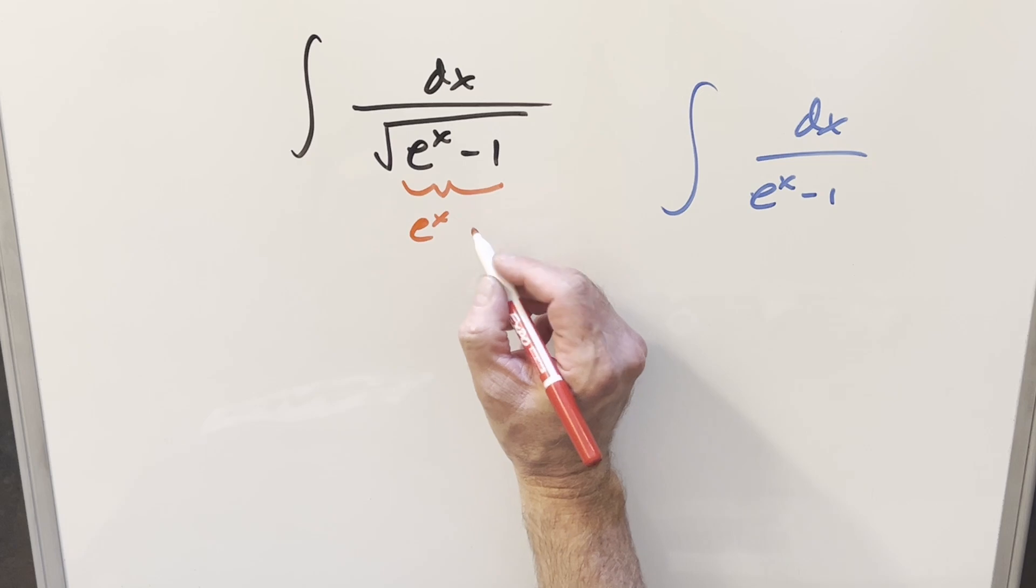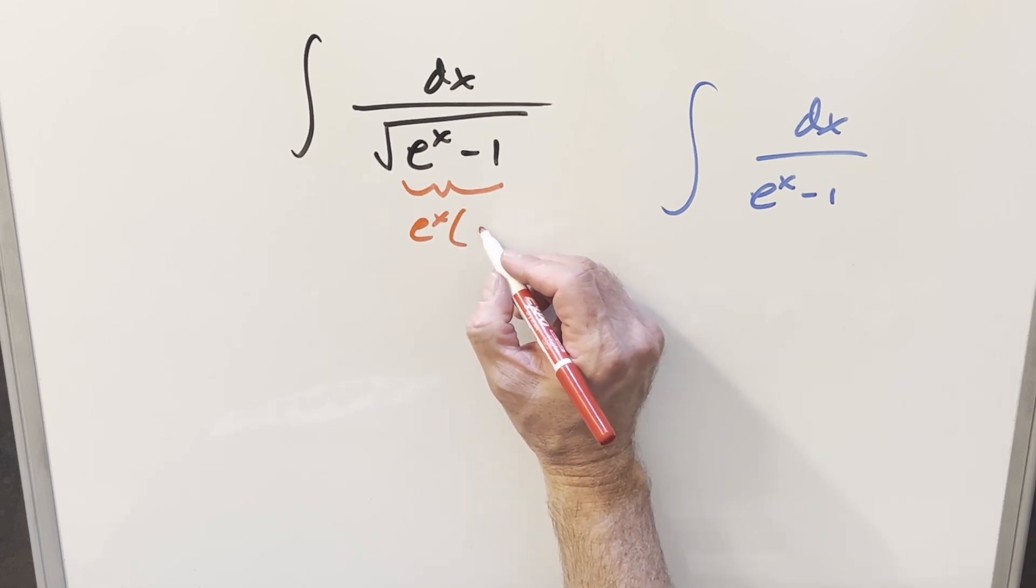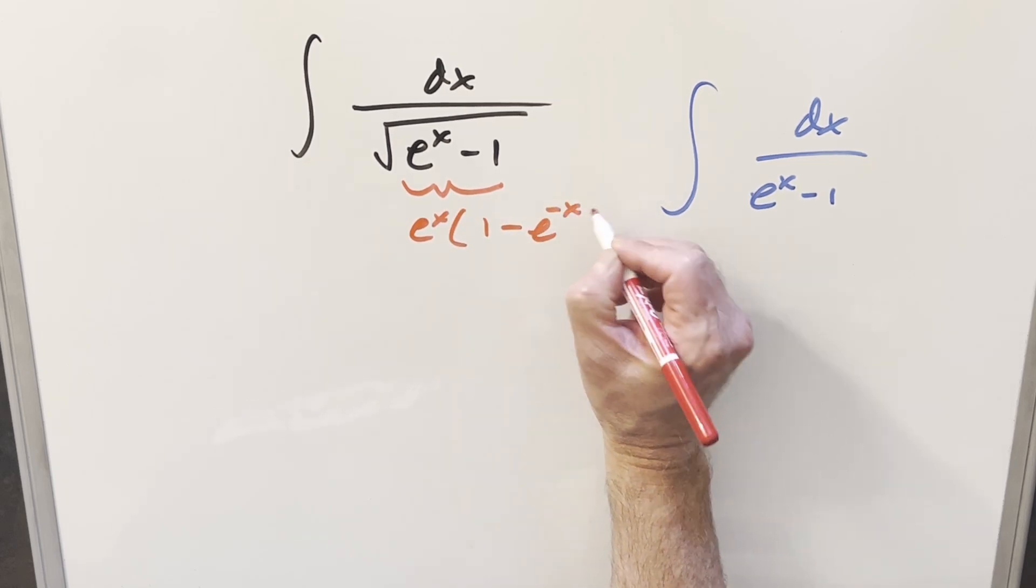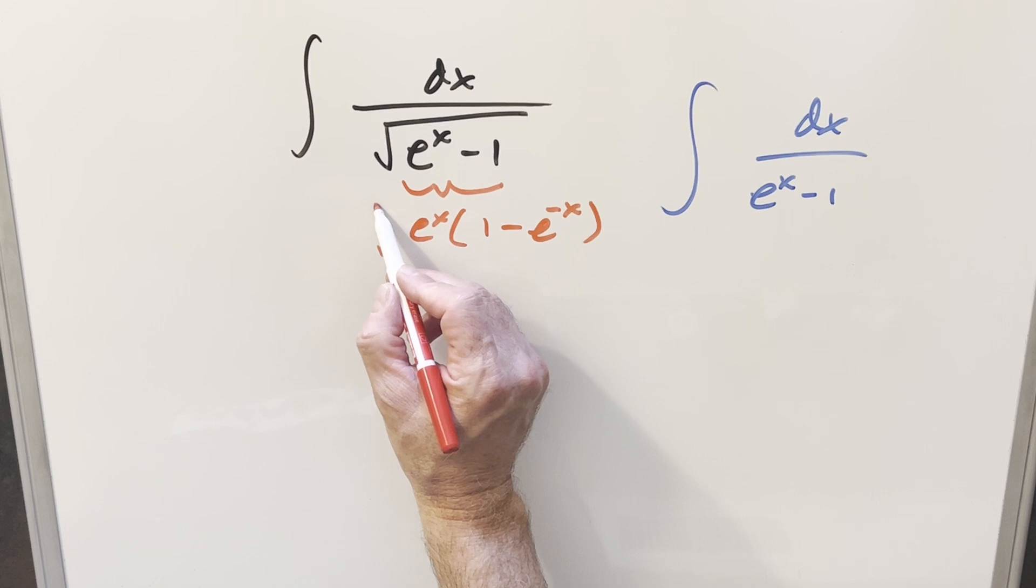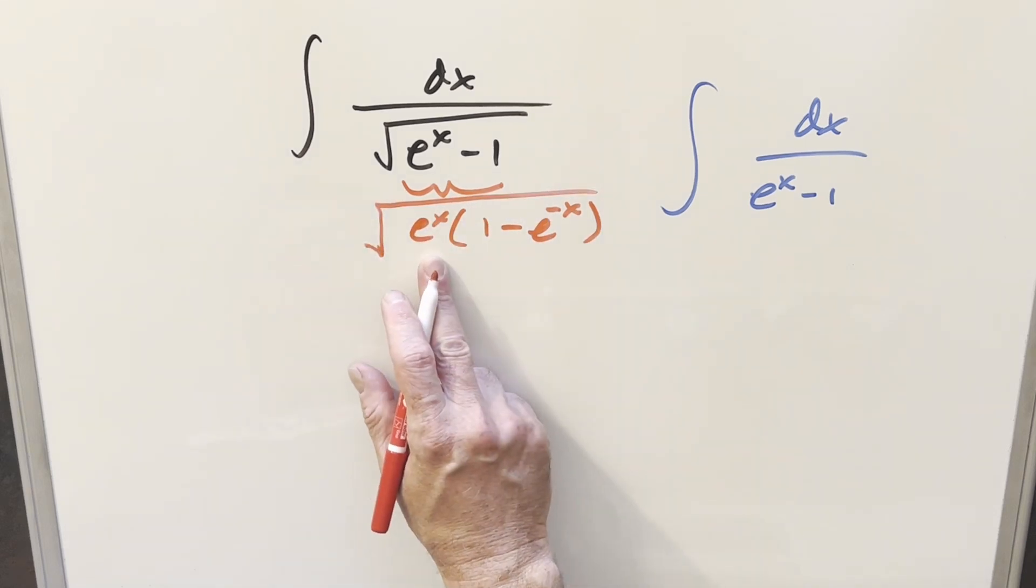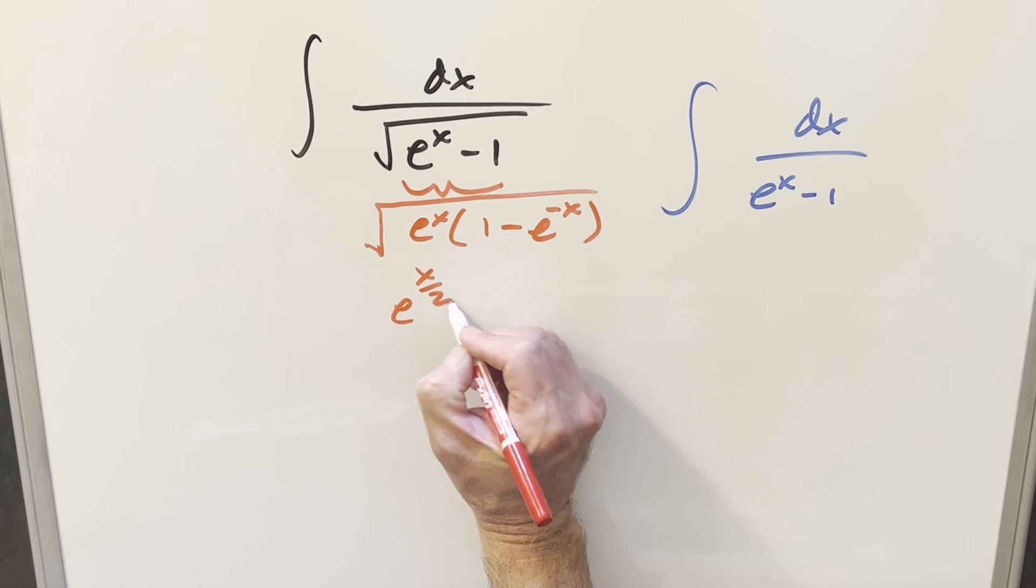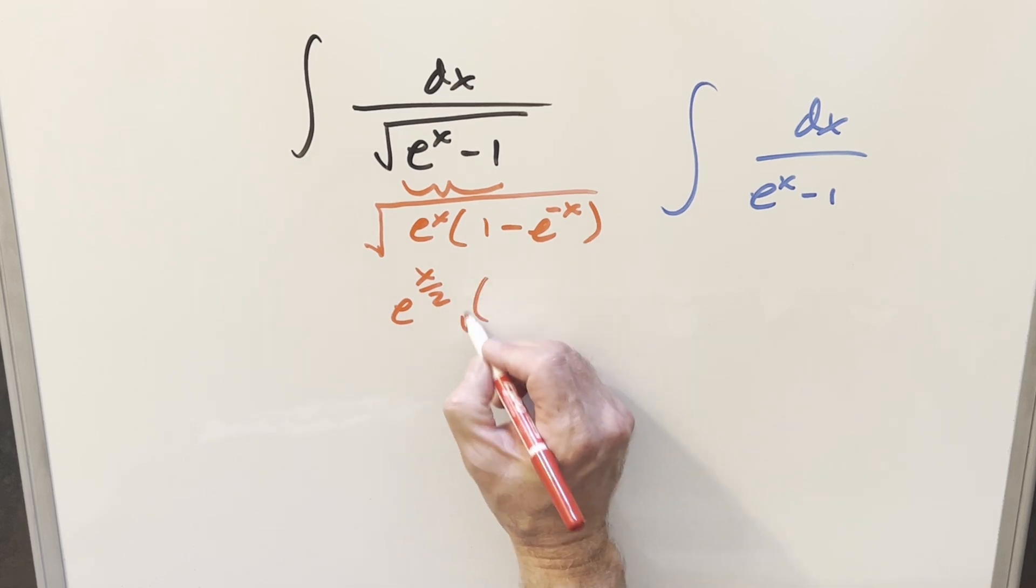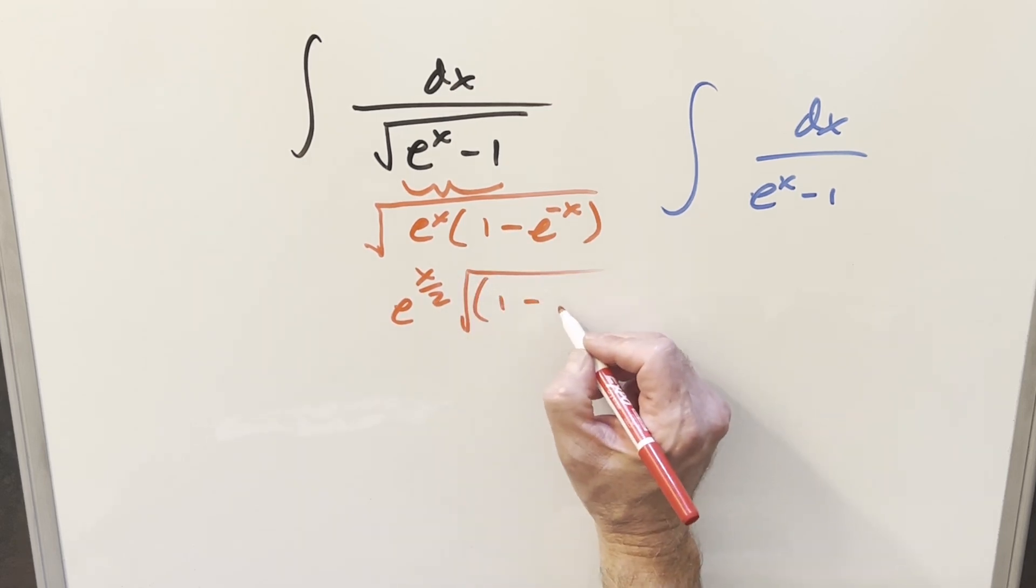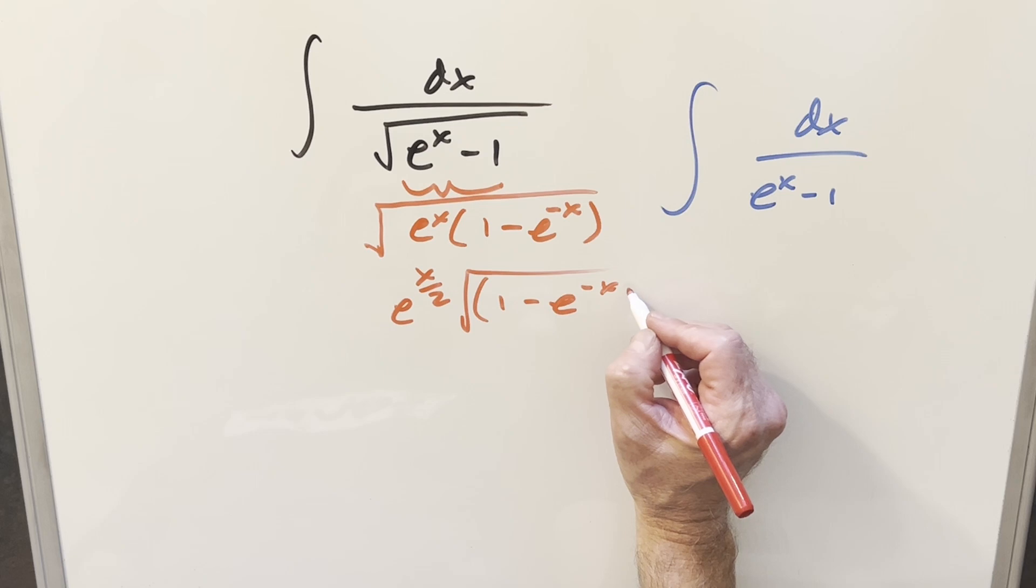So how I want to factor this is just going to be e to the x times 1 minus e to the minus x, and this thing's all inside the square root. So then if I take the e to the x outside of the square root, I can write this as e to the x over 2 times square root 1 minus e to the minus x.